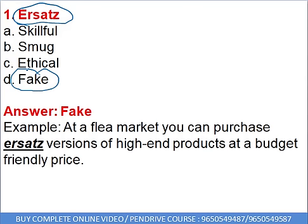If you read any word contextually, it's going to be permanent in your head — you'll be able to retain the word for a longer period. 'At a flea market, you can purchase ersatz versions of high-end products at a budget-friendly price.' There are branded, expensive things in the market we are unable to buy. At flea markets, high-end products are available, but they are not real — they are ersatz versions, fake versions of branded things, at a very nominal and budget-friendly price. So ersatz version means fake or artificial version of high-end branded products.